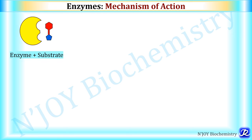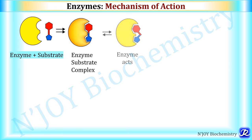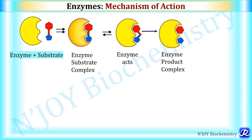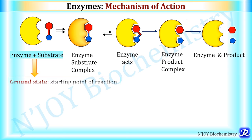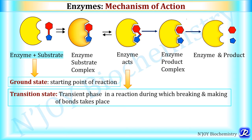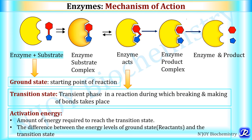For enzyme action, the substrate first comes in contact with the enzyme to form the enzyme-substrate complex. Then enzyme catalysis occurs, the enzyme acts on the substrate to form product, leading to formation of an enzyme-product complex; the product is released and the enzyme can be reutilized. At the starting point, reactants are at the ground state; when enzyme acts on the substrate, it is the transition state — where breaking and making of bonds takes place. All chemical reactions have an energy barrier separating reactants and products called activation energy, which is the amount of energy required to reach the transition state.